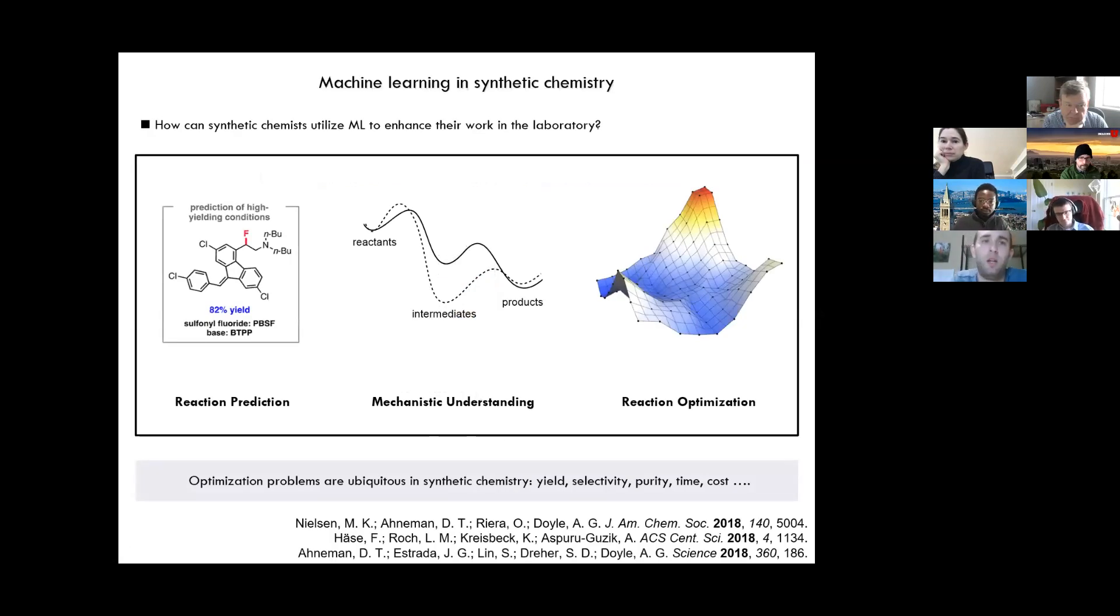So this is all born from sort of asking ourselves how synthetic chemists can utilize machine learning to enhance their work in the laboratory. I think there are a lot of ways that people are working on doing this. One of those is reaction outcome prediction. Another is trying to infer some mechanistic understanding from data. And then of course the topic of this tutorial, reaction optimization.